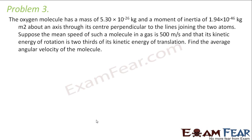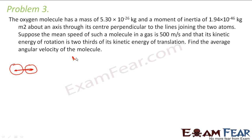Let us look at problem 3. It says the oxygen molecule has a mass of 5.30 × 10⁻²⁶ kg and a moment of inertia of 1.94 × 10⁻⁴⁶ kg·m² about an axis through its center perpendicular to the line joining the two atoms. Let us suppose these are the two atoms of the oxygen molecule. The mass of the whole system is 5.30 × 10⁻²⁶ kg and the moment of inertia is 1.94 × 10⁻⁴⁶ kg·m².